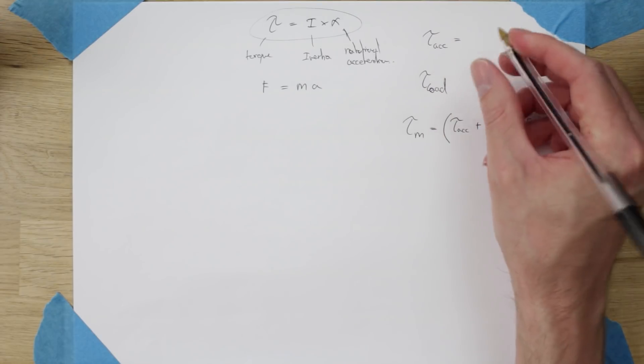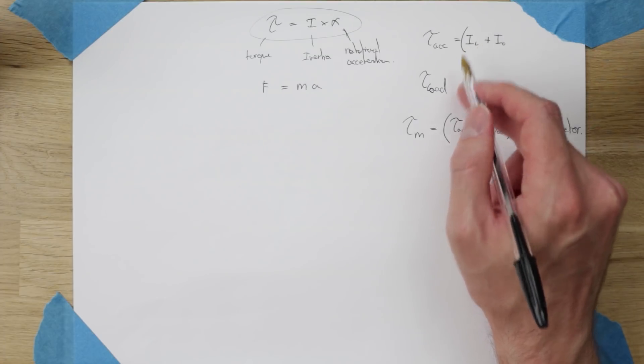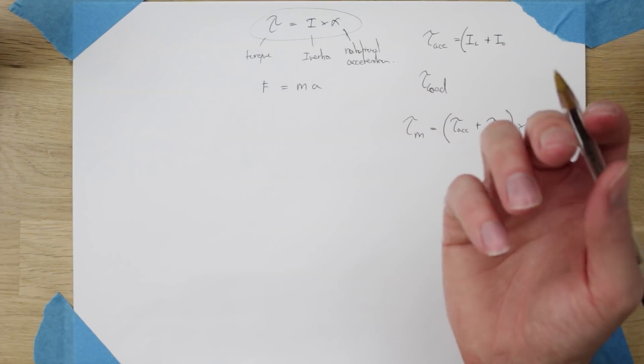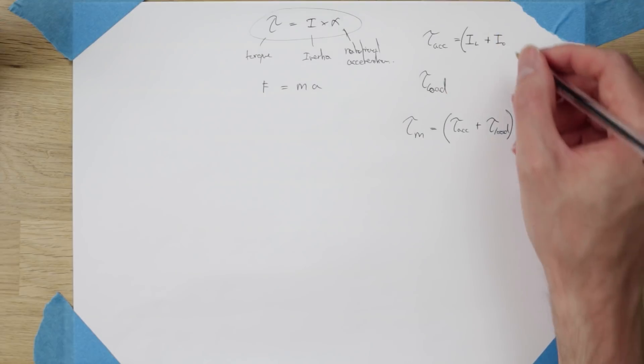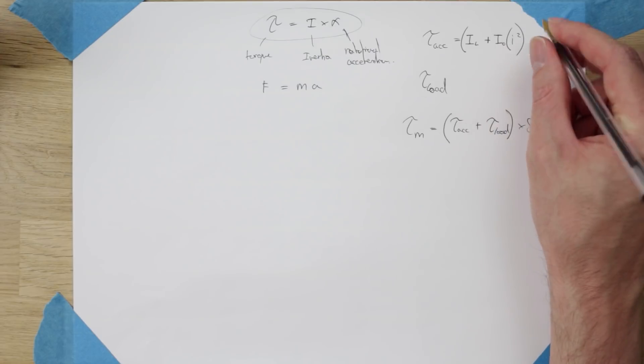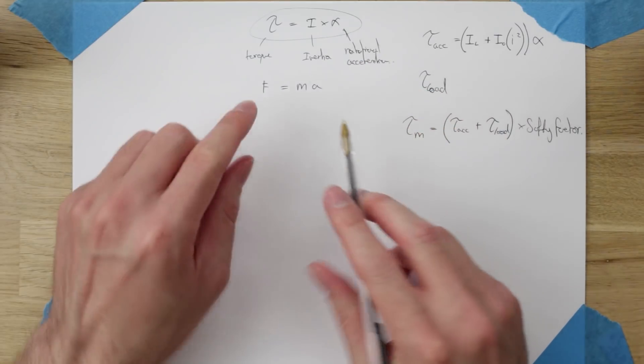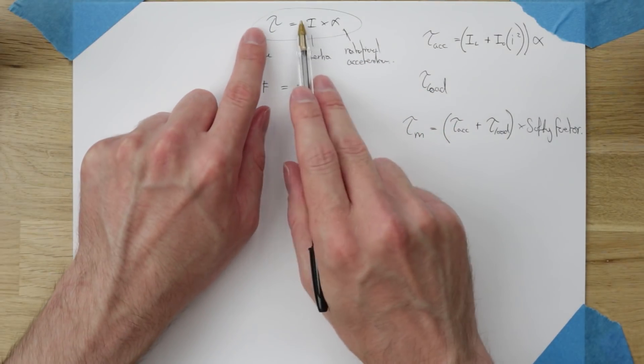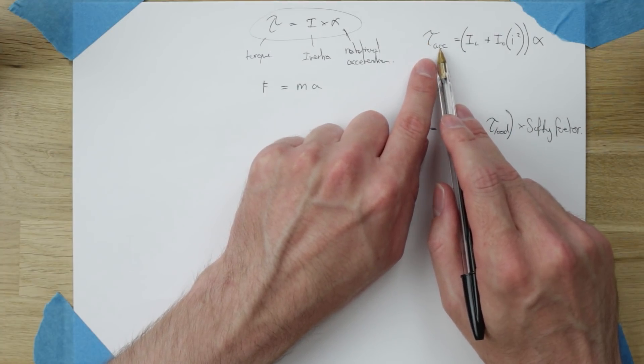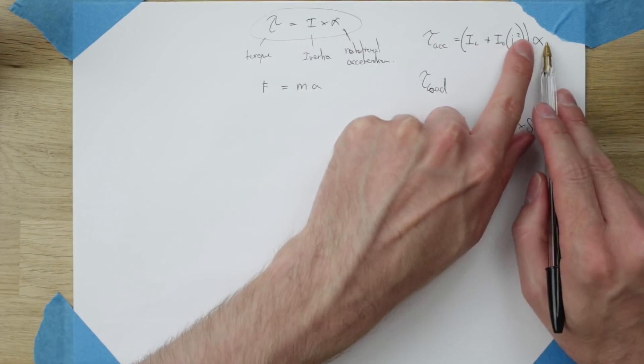To find your acceleration torque you need a couple more things. We have two inertias: we have the inertia of the load which is the inertia of the moving components, and i0 is the inertia of the rotor, the moving part of the stepper motor. We also need to multiply that by a gear ratio i and that needs to be squared. And then all of that is multiplied by alpha, our rotational acceleration. So what we've done here is basically taken this general equation and made it more specific to the instance for acceleration torque.